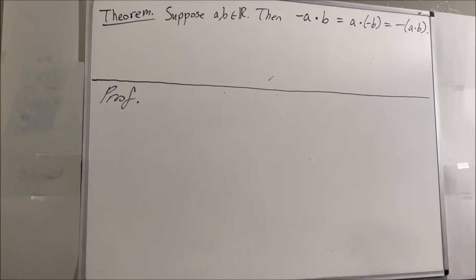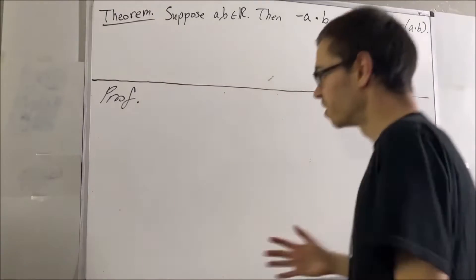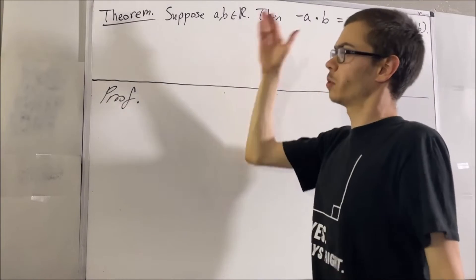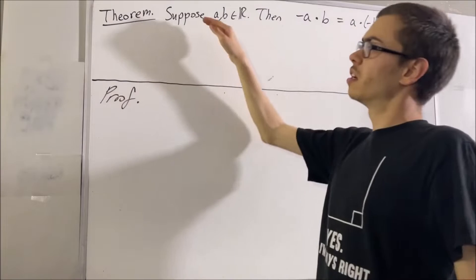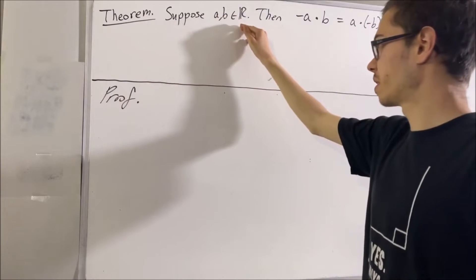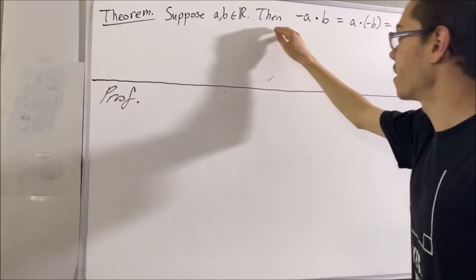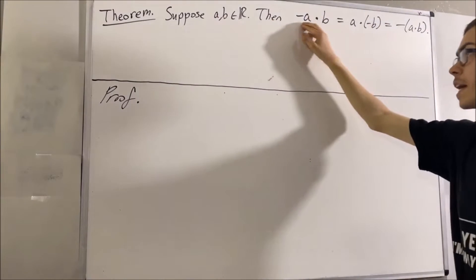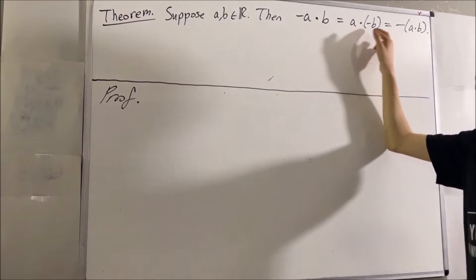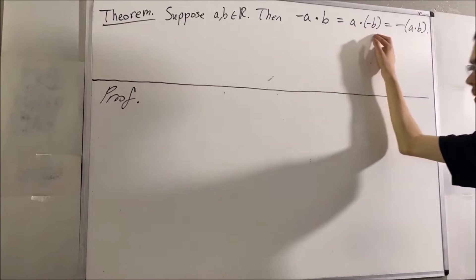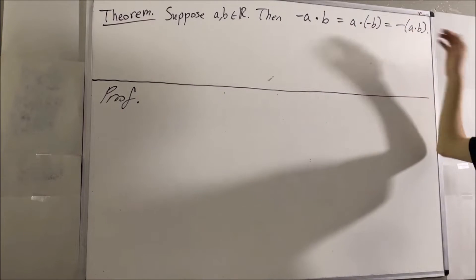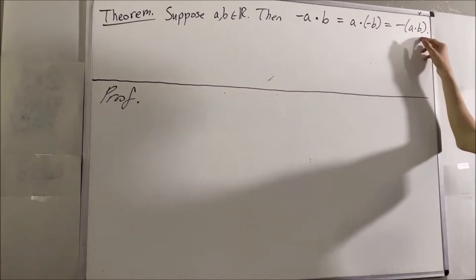Hello! In this video, we are going to prove the following theorem. Suppose A and B are real numbers. Then, the negative of A times B is equal to A times the negative of B, which is equal to the negative of A times B.